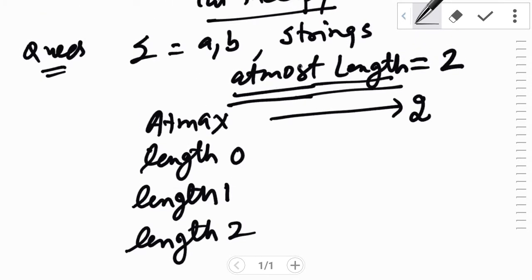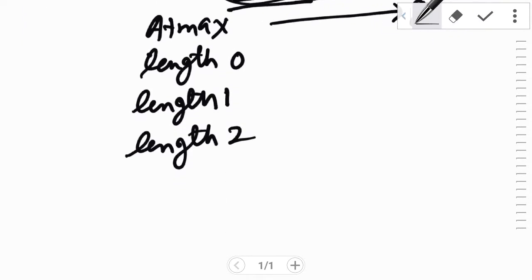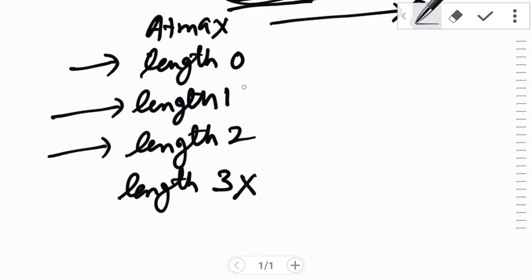Now if a string of length 3 comes then it should not be accepted, it should be rejected. So we have listed that length 0, length 1, and length 2 strings can be accepted.